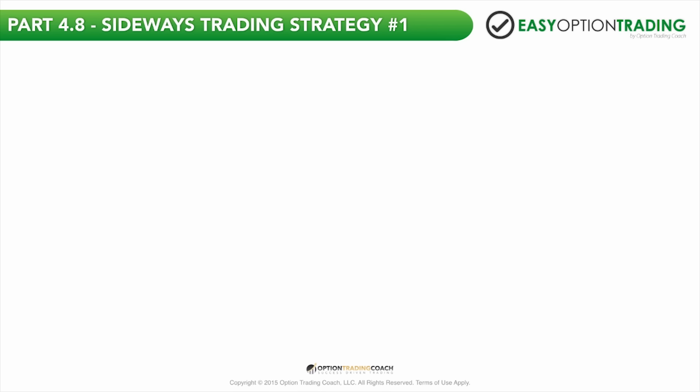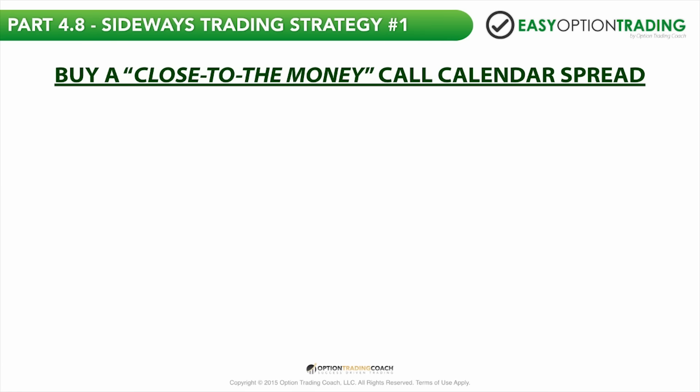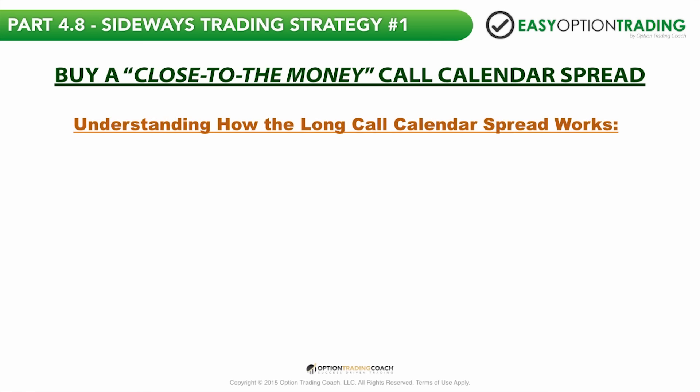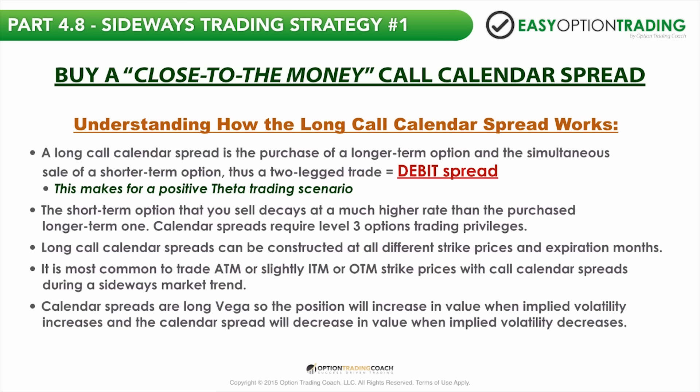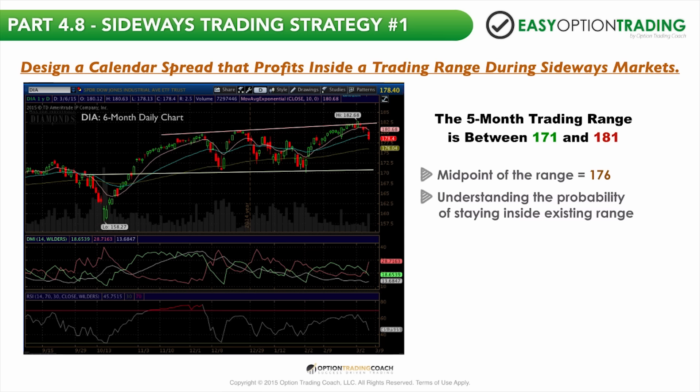You're going to learn how to trade in a sideways, range-bound market, and there are two strategies in this module. The first strategy — buying a close-to-the-money call calendar spread — is the first way you can profit in a sideways market. Buying a long call calendar spread is the purchase of a longer-term option and the simultaneous sale of a shorter-term option, so it's also a two-legged trade. You're long an option expiring in two or three months and short an option expiring in one month. You're going to have that positive time decay theta scenario, so you produce income as each day passes.